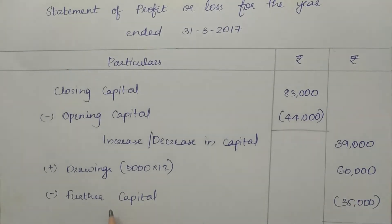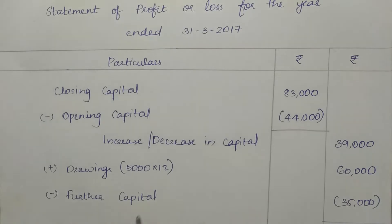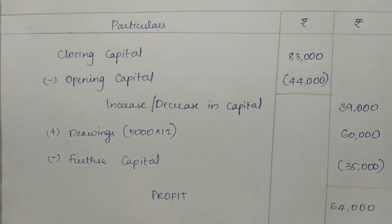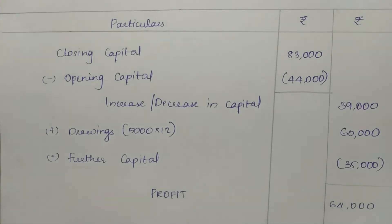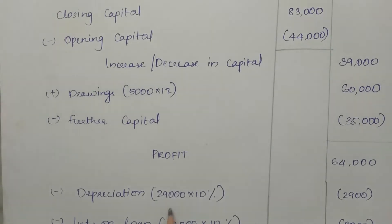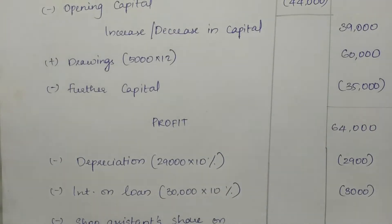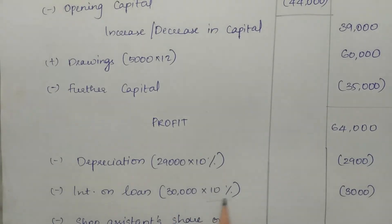Adding back the drawings of 60,000 and deducting the additional capital of 35,000 gives us a profit before adjustments of approximately 64,000. Then we apply adjustments: depreciation is 29,000 into 10% = 2,900, and interest on loan is 30,000 at 10% = 3,000.